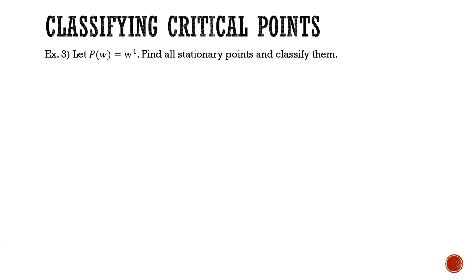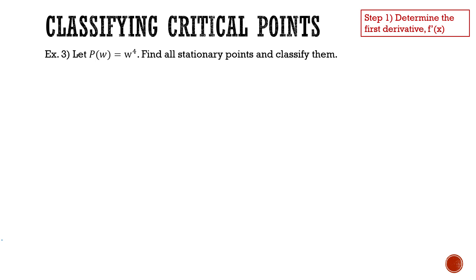Here we have example 3. Let p(w) equal w to the power of 4. Find all stationary points and classify them. First, we're going to determine the first derivative. So p'(w) is going to be the derivative of w to the power of 4, which is 4w cubed.